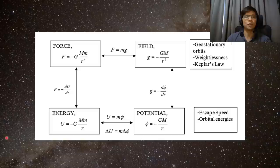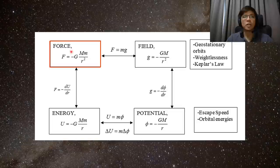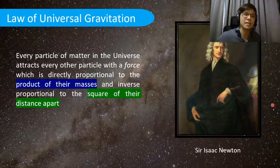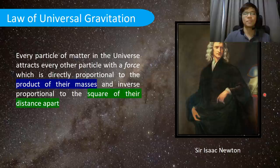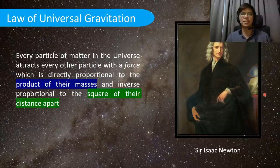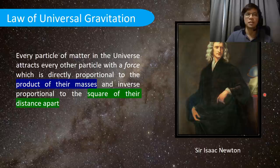We will refer to this flow chart or mind map often during the lecture. In this first lecture, we will just be covering the force of gravitation. Newton's law of universal gravitation was formulated by Sir Isaac Newton, who is also famous for inventing calculus and the three laws of motion. Newton's law of gravitation states that every particle of matter in the universe attracts every other particle with a force directly proportional to the product of their masses and inversely proportional to the square of the distance apart.